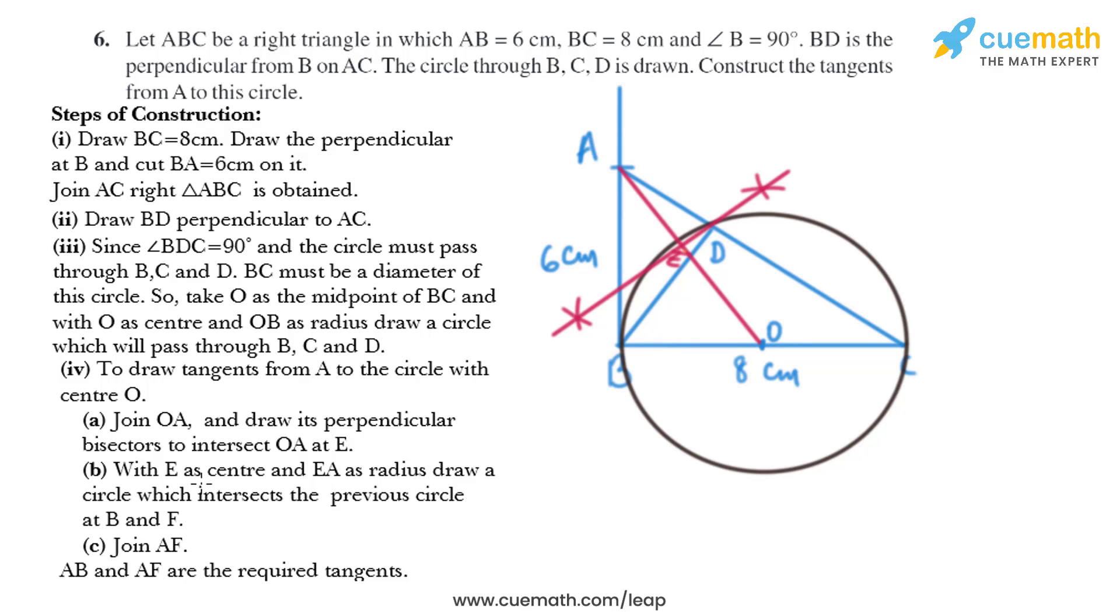Now in the next step, with E as center and EA as radius, draw a circle which intersects the previous circle at B and F. So we'll take the radius as EA and draw a circle like this. This circle intersects the previous circle at F. Now in the next step we just need to join A and F. So we have got AB and AF as the required tangents.